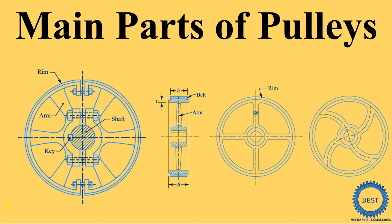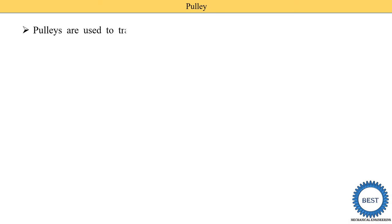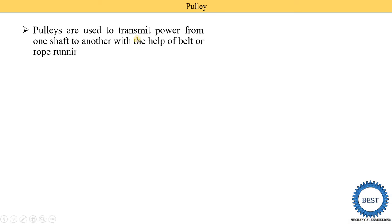In this video, I explain what is a pulley and the construction of pulley, meaning the main parts of pulley. First, we understand what is a pulley. Pulleys are used to transmit power from one shaft to another with the help of a belt or rope running over them.